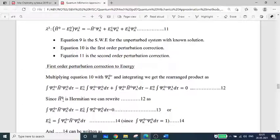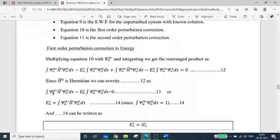Since h zero cap is Hermitian, we can write this equation 12 as integral psi n zero star h prime cap psi n zero d tau minus en1 into integral psi n star psi n zero d tau equals zero. That is Hermitian property of operators.